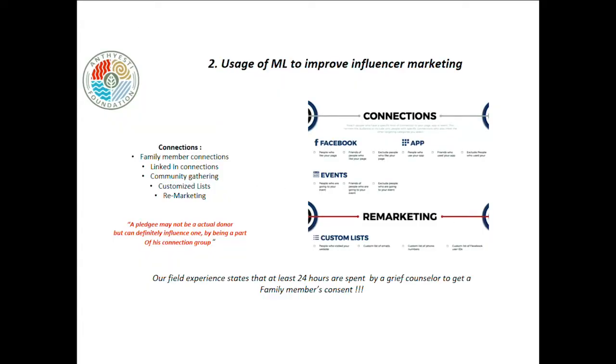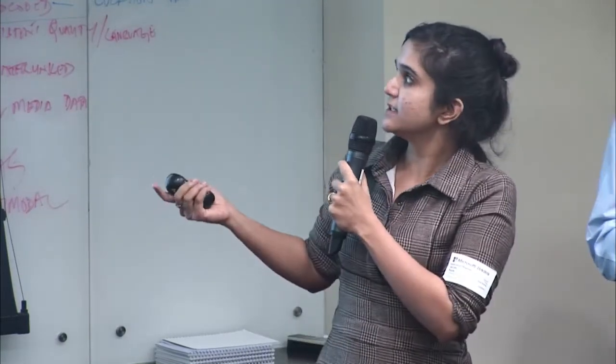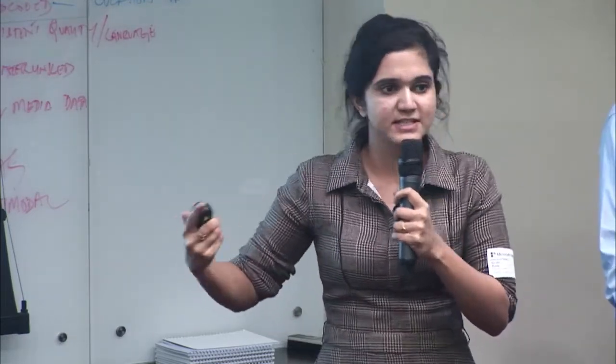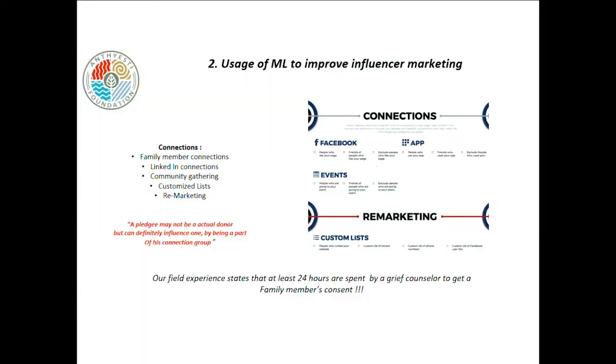Usage of machine learning to improve influencer marketing. A pledgy may not really become an actual donor, but they can definitely influence one. The probability that I die due to a road traffic accident, that it results in a brain death, and that I donate my organs — that probability is very small. But if I've been an influencer in a community of one lakh people, and if any person goes through that stage and I'm a decision-maker for that relative, then I'm definitely involved. We should be using this for influencer marketing — how one pledgy can use their connections through family member connections, LinkedIn connections, customized lists, and remarketing to build a bigger group.